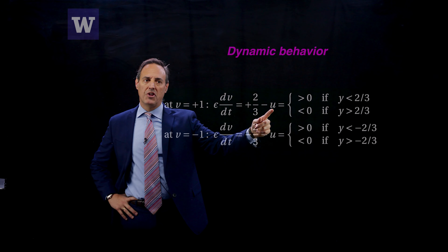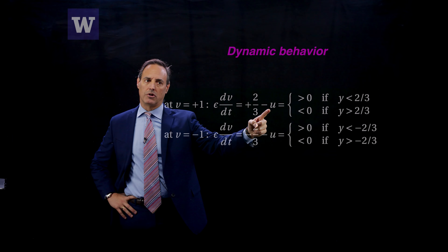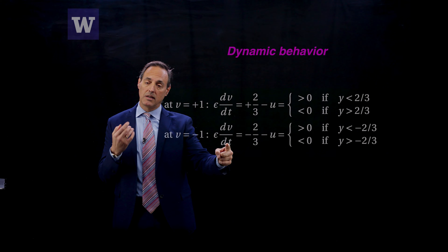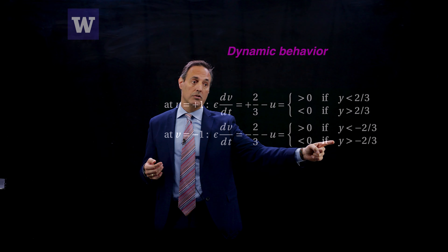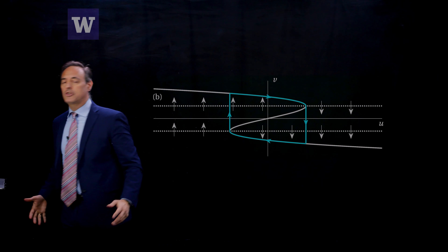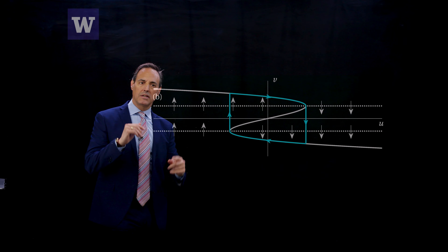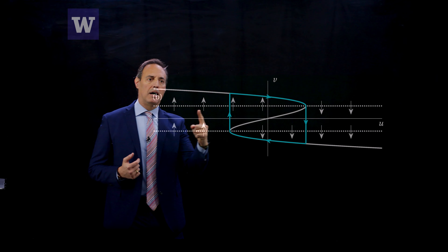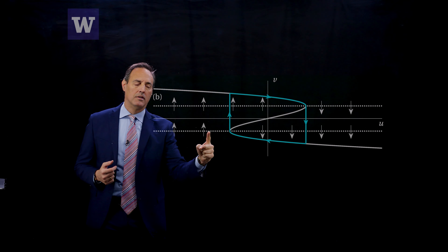The sign of dv/dt depends on whether u is greater or less than 2/3 along v = 1, and whether u is greater or less than −2/3 along v = −1. So I'm looking to see when dv/dt is positive or negative in each case. The result: along the v = 1 line, dv/dt is positive on one side and negative on the other; similarly for the v = −1 line.